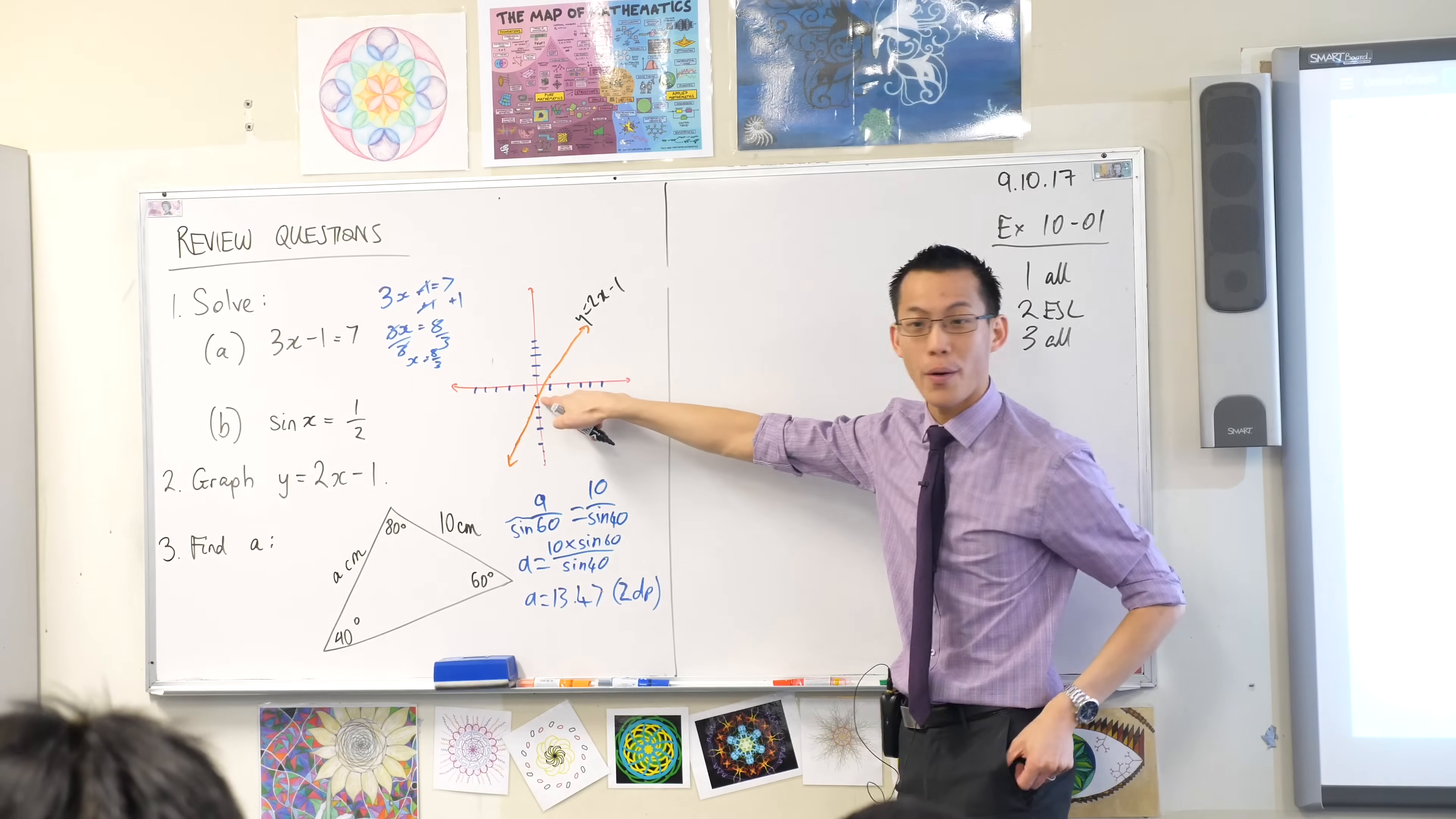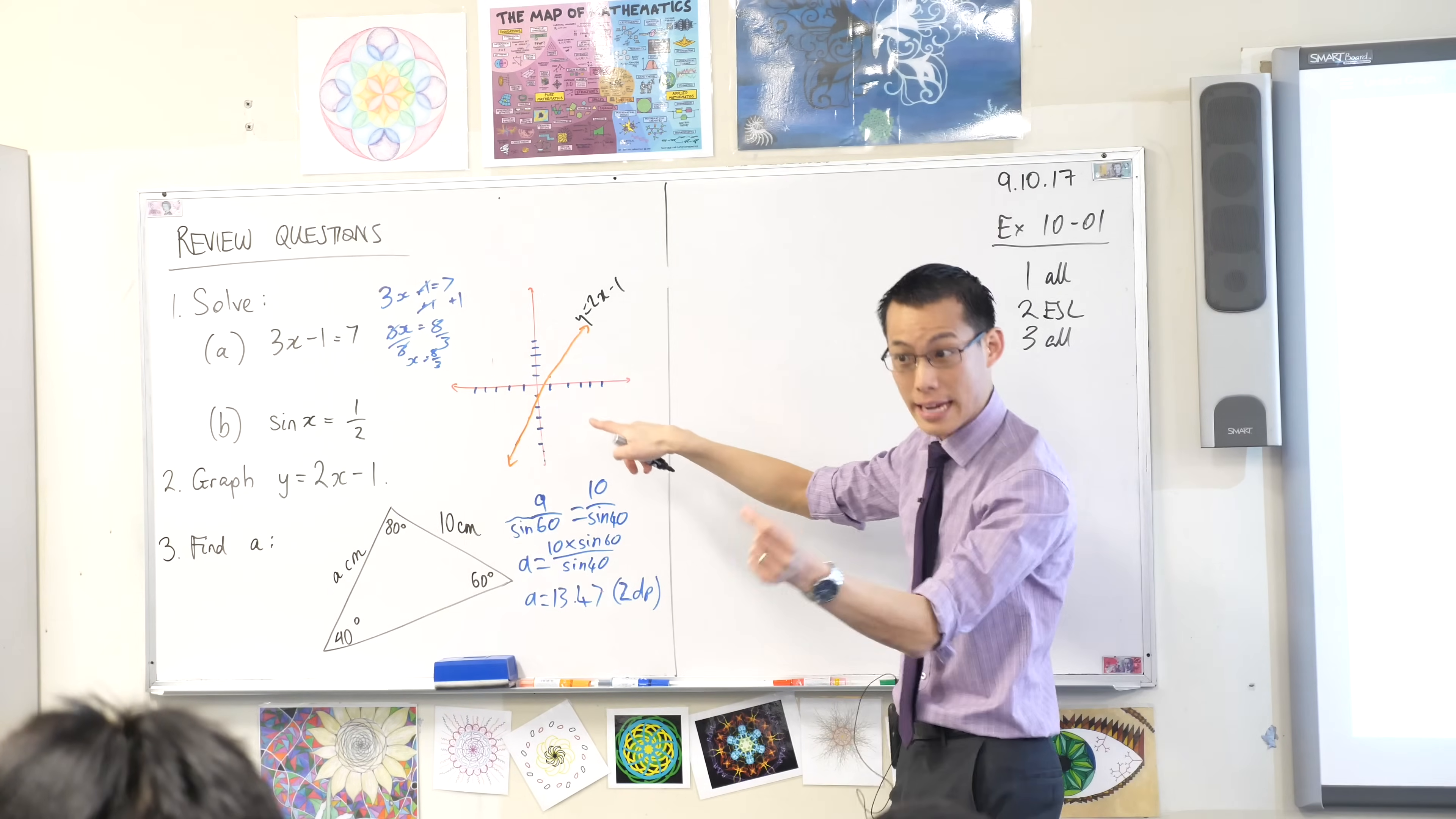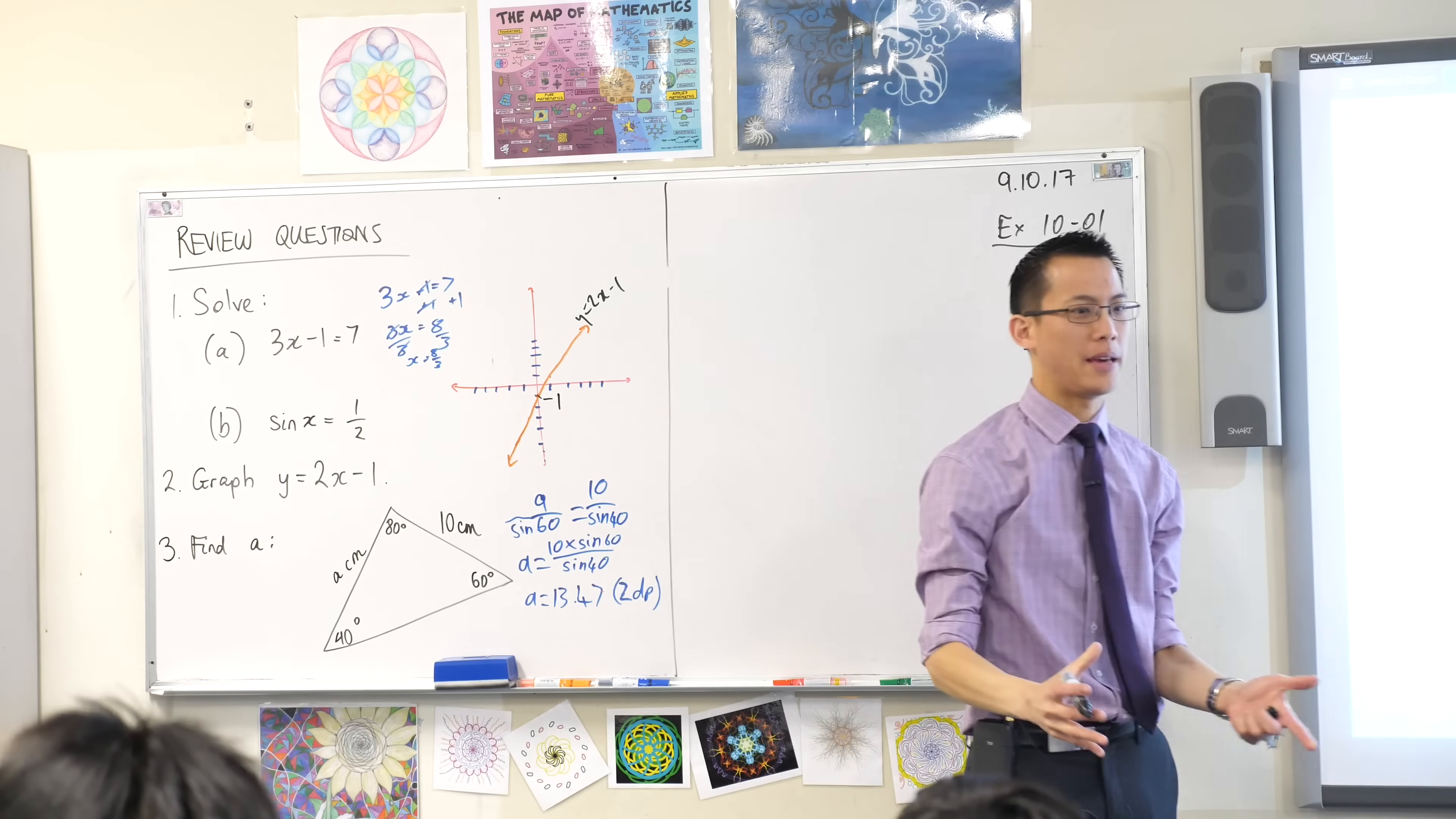So you can see that this point here, what do we call that, where the graph intersects with this axis? What do we call that? The y-intercept. What is its value? Negative 1. Is that what it should be?